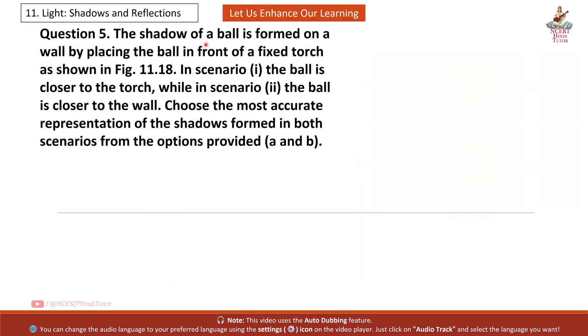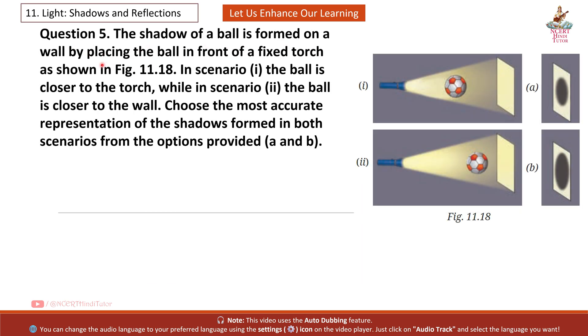Question 5: The shadow of a ball is formed on a wall by placing the ball in front of a fixed torch as shown in figure 11.18. In scenario 1st, the ball is closer to the torch. While in scenario 2, the ball is closer to the wall. Choose the most accurate representation of the shadows formed in both scenarios from the options provided A and B.